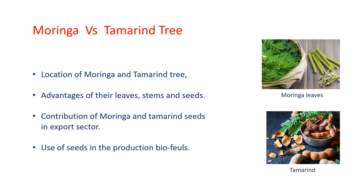In this section, we will discuss about the location of Moringa and Tamarind tree respectively, along with their advantages of leaves, stems, seeds, etc. We will also talk about the contribution of Moringa and Tamarind seeds in the export sector for India and how their seeds are useful in the production of biofuel.